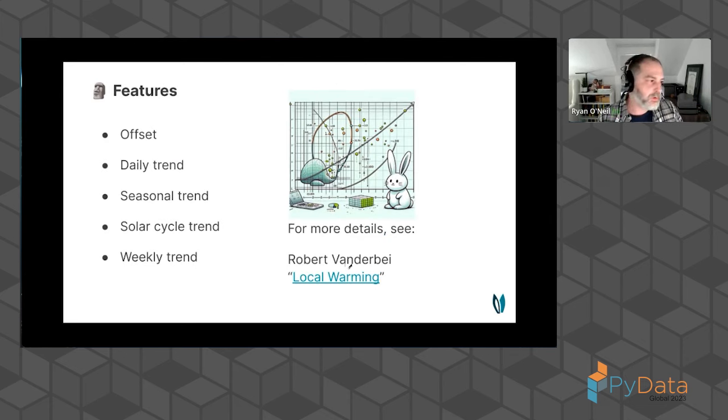I showed you the data a little bit ago. On the right is a Dolly impression of a bunny solving a regression, which I thought was interesting. There's nothing particularly new in this implementation—I just stole it from a paper by Rob Vanderby. The slides are in the GitHub, so you can find that link if you're interested. I'm basically doing exactly what he's doing. I designed the data so I know what the features are: an offset, a daily trend, seasonality, solar cycle, and a weekly trend. We're just going to plug that into the model and see what happens.